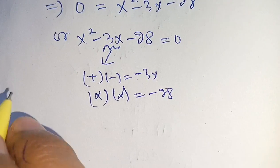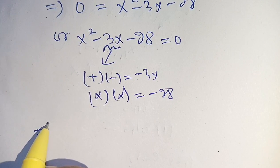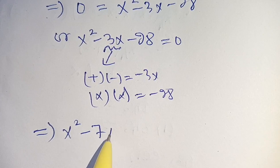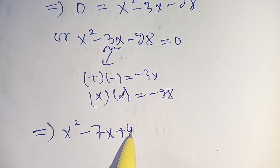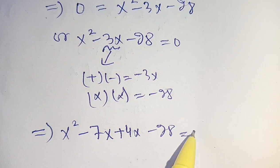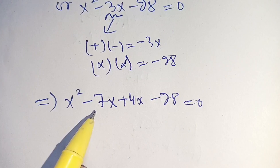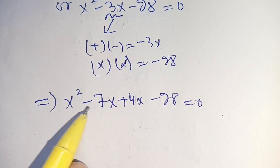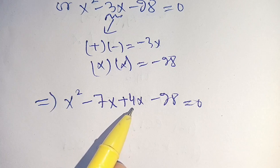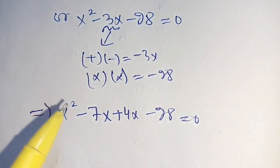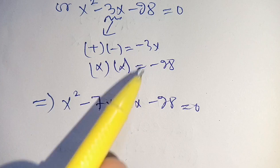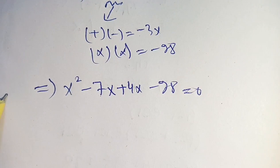We write the equation as x squared minus 7x plus 4x minus 28 is equal to 0. When we add minus 7x plus 4x it becomes minus 3x, and when we multiply minus 7 times 4 it becomes minus 28.